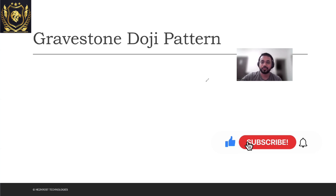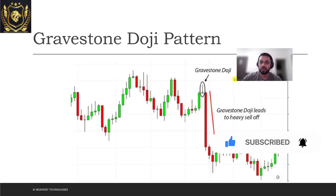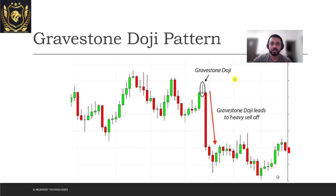Let's look at an example. The market psychology is simple but very powerful — this is what the Gravestone Doji pattern actually looks like. Here you can see the sellers have pushed the price down. Although there was an uptrend here, the sellers pushed the price down and then there was a heavy sell-off.